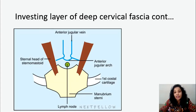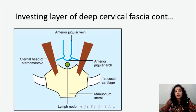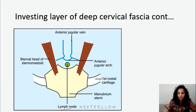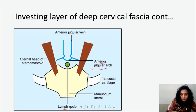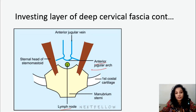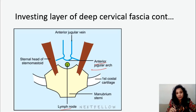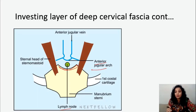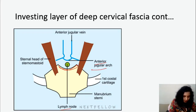As the deep cervical fascia reaches near the manubrium sterni, it splits itself to enclose a small fascial space which contains a lymph node and also contains the anterior jugular venous arch — the communication between the two anterior jugular veins. That is about the deep cervical fascia just above the suprasternal notch, and the space which it encloses is called the Burns space.